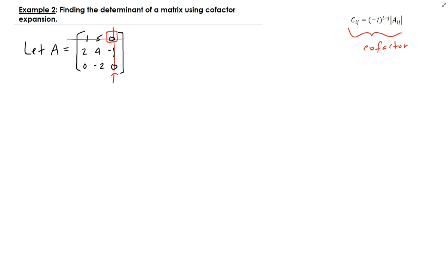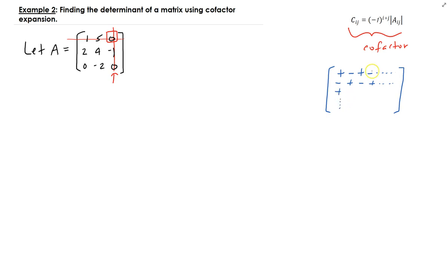The sign pattern is: it's always plus, minus, plus, minus, and so on in the first row. Then minus, plus, minus, plus, and so on in the second row. Then plus, and so on. The signs alternate, and those are the values of the sign for the coefficient of the cofactor.